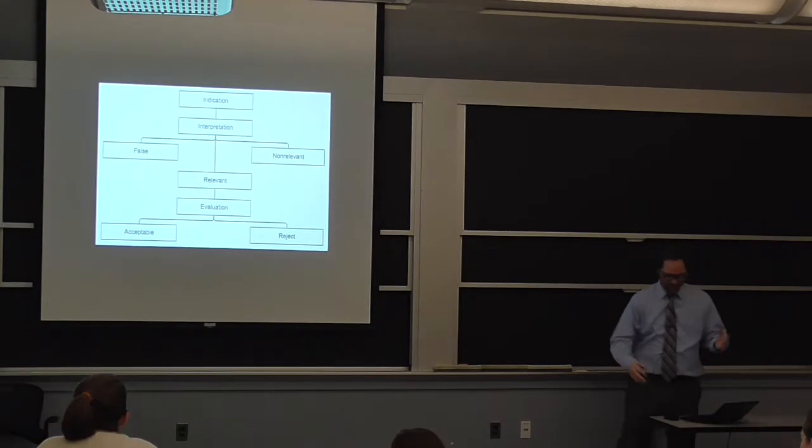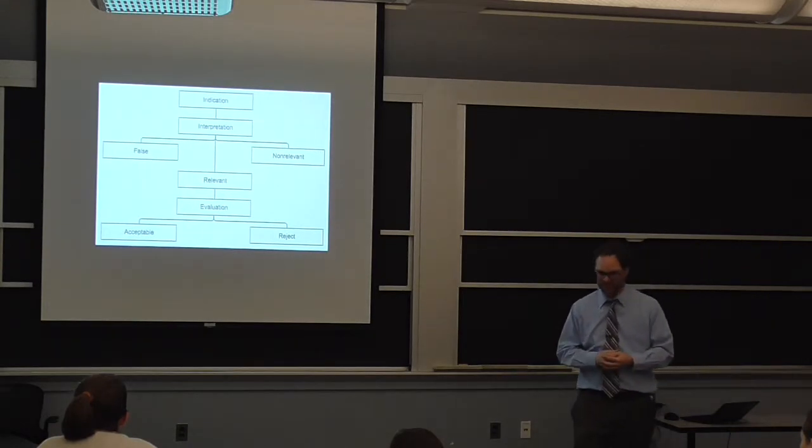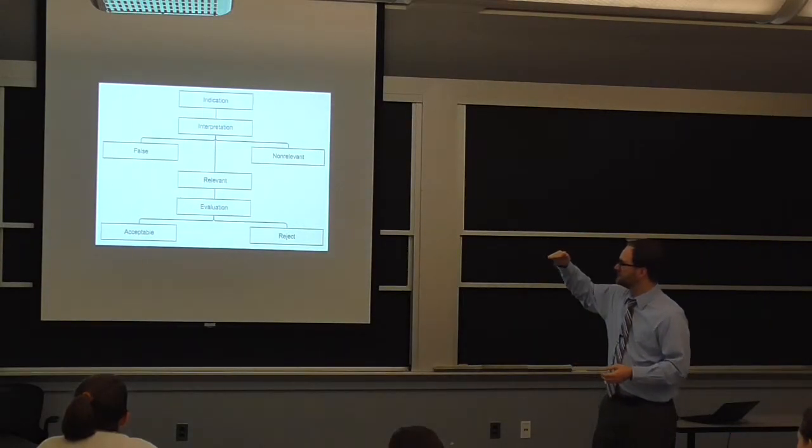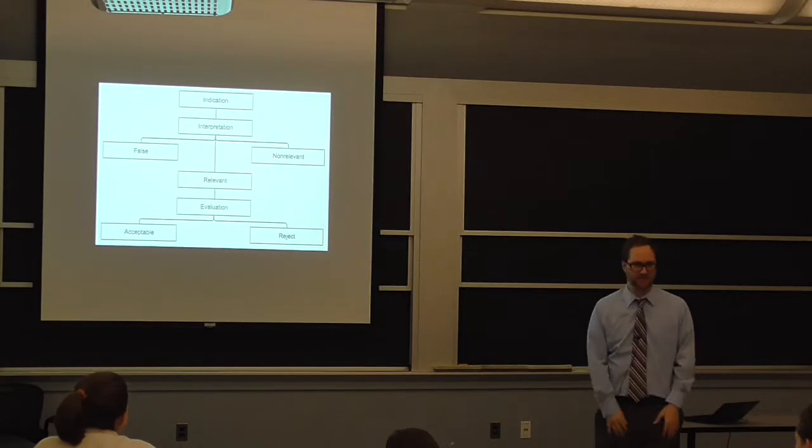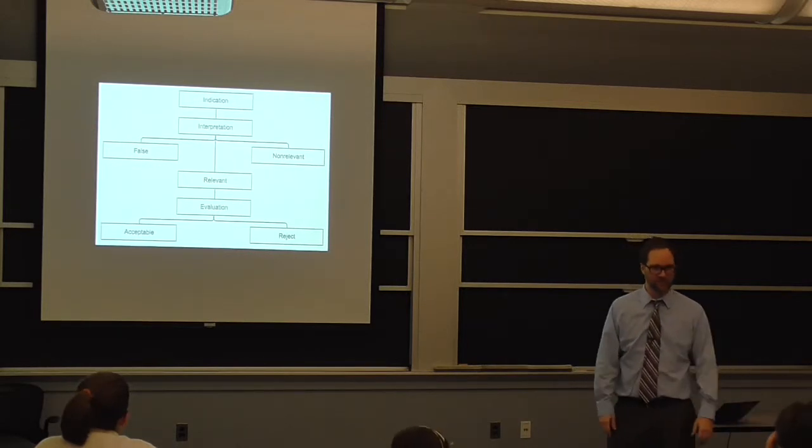This is the hierarchy arranged graphically. You have your indication. That's the shadow. You have an interpretation of the shadow, whether it's false, non-relevant, or relevant. And then you have a person saying, what does it mean? Is it something that I need to do something about?